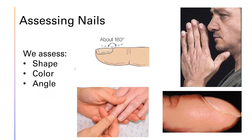When we assess the nails, we're looking at nail color, as it should be similar to the rest of the skin. We also assess capillary refill, which is when we press on the nails, making the nail bed turn white, and then we see how fast the nail bed returns back to its normal color. The bottom left picture shows what assessing capillary refill looks like. This is actually part of the cardiovascular assessment, but we do it to the nails. We also assess the shape and angles of the nails and the nail bed. The angle of the nail bed and the nail base should be about 160 degrees, so basically flat.